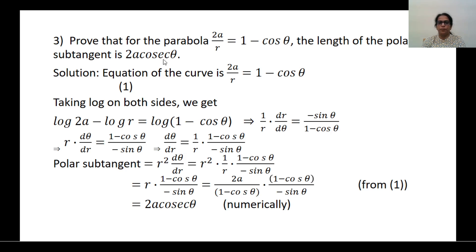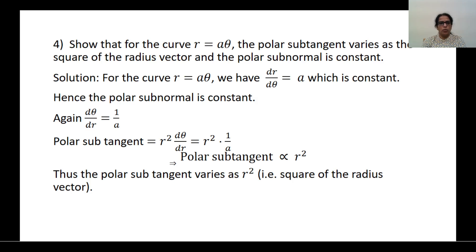Also, prove that for the parabola 2A/R = 1 − cosθ, the length of the polar subtangent is 2A cosecant θ — follow the same procedure. Another problem: Show that for the curve R = Aθ, the polar subtangent varies as the square of the radius vector and the polar subnormal is constant. Differentiate R = Aθ with respect to θ: dR/dθ = A, which is a constant, and this is the polar subnormal.